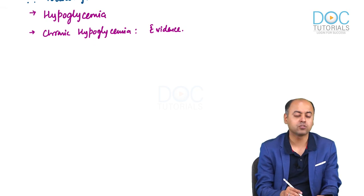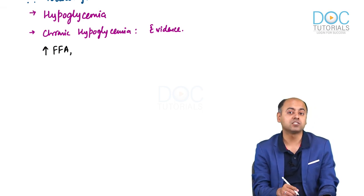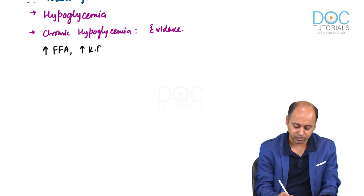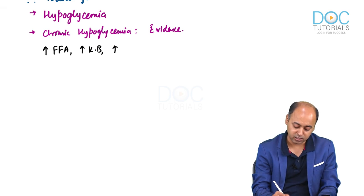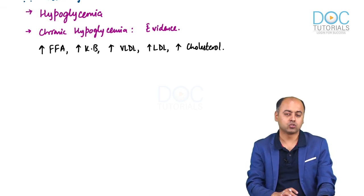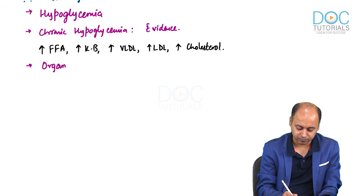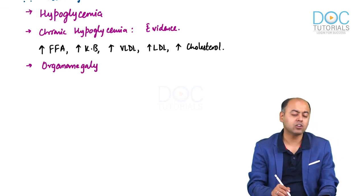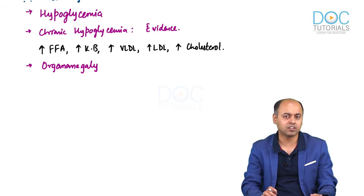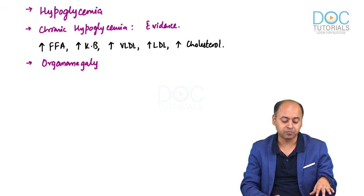Evidence of chronic hypoglycemia includes: when hypoglycemia is present, lipogenesis will occur and you will find increased free fatty acids. These free fatty acids will go to the liver and can result in formation of ketone bodies. The fatty acids will get conjugated and released as VLDL, which will finally get converted into LDL, giving increased cholesterol. Additionally, at least one organomegaly should be present. These three features together indicate glycogen storage disorder.